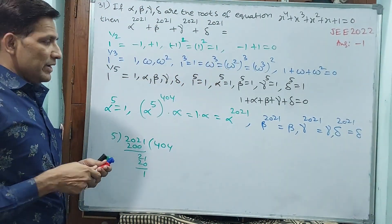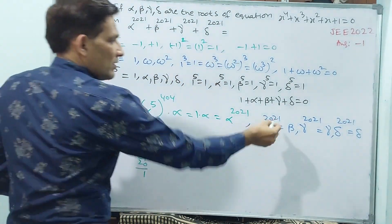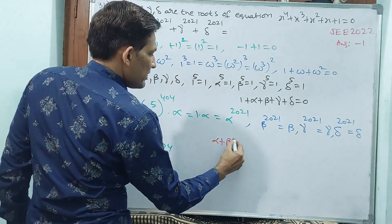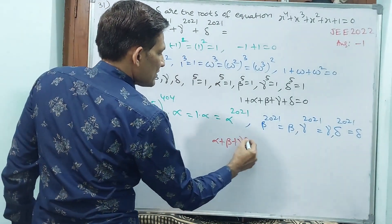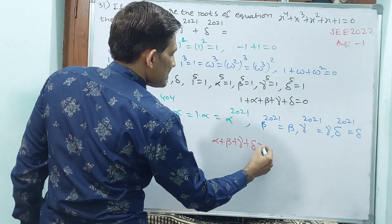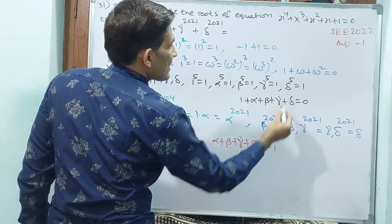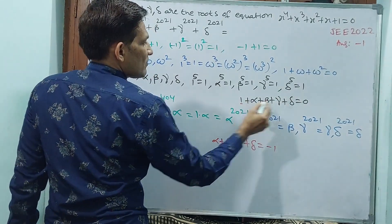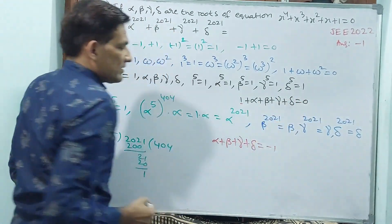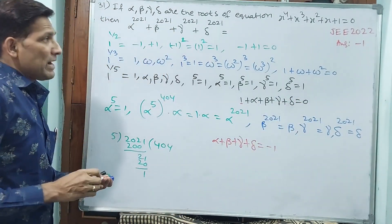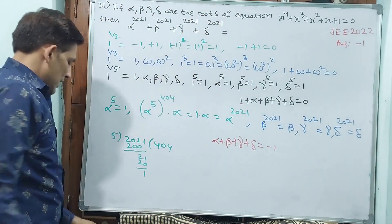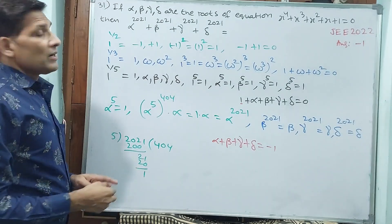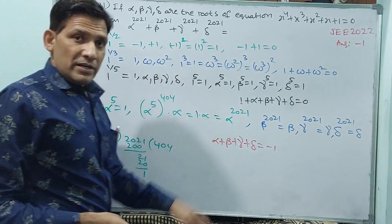So alpha to the power 2021 plus beta to the power 2021 plus gamma to the power 2021 plus delta to the power 2021 equals alpha plus beta plus gamma plus delta, which equals minus 1. Your answer is minus 1. Let us go for the next question.